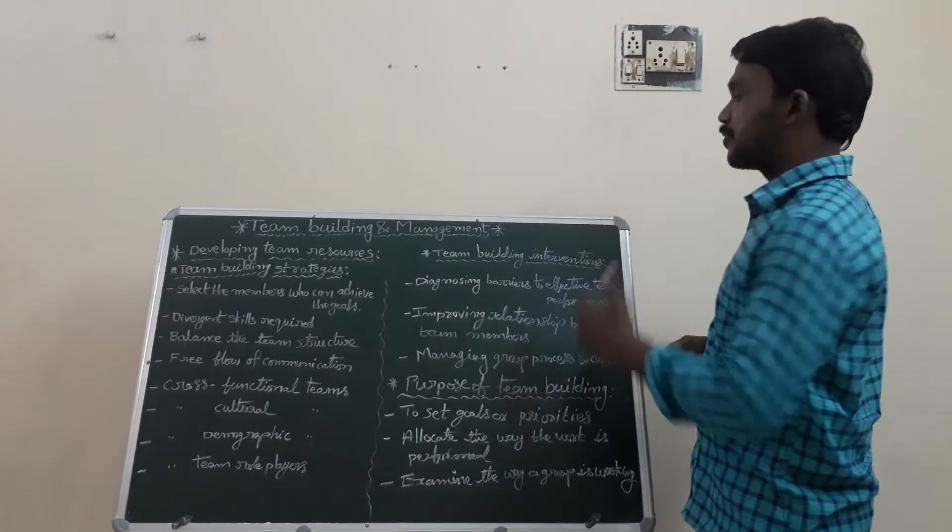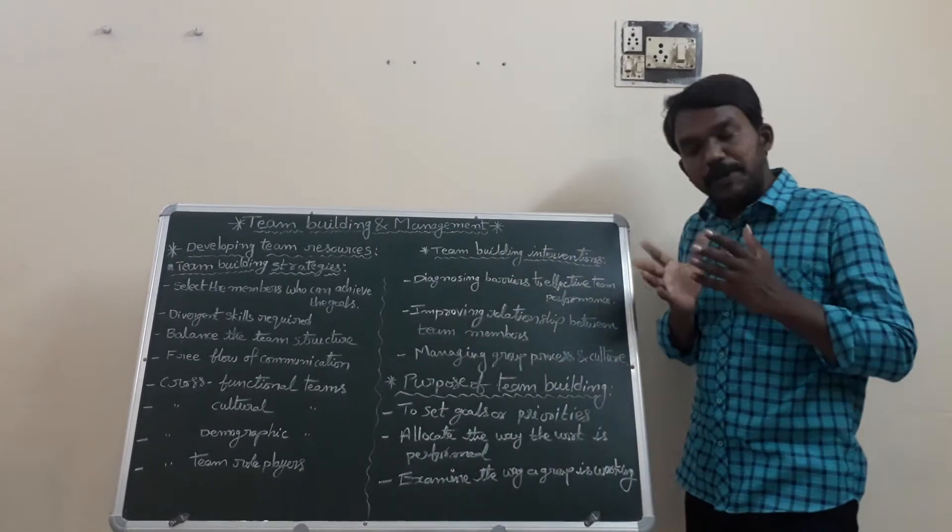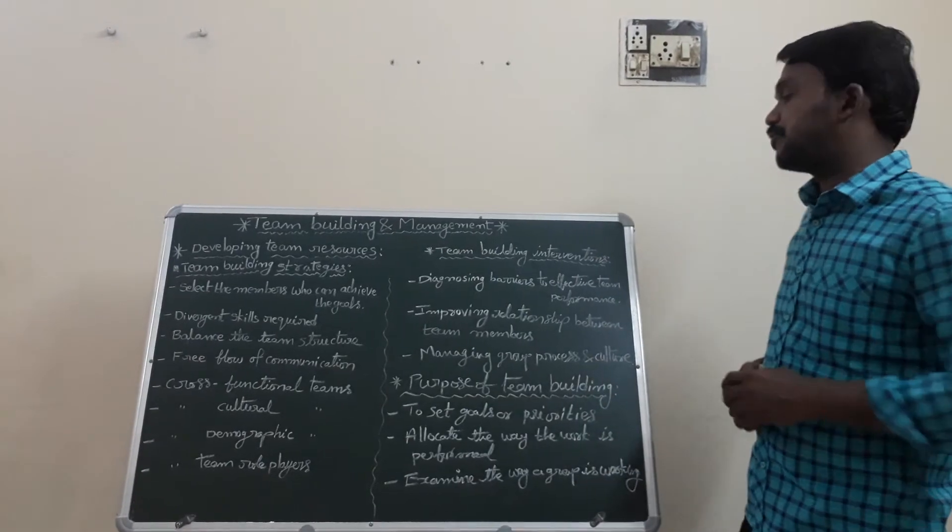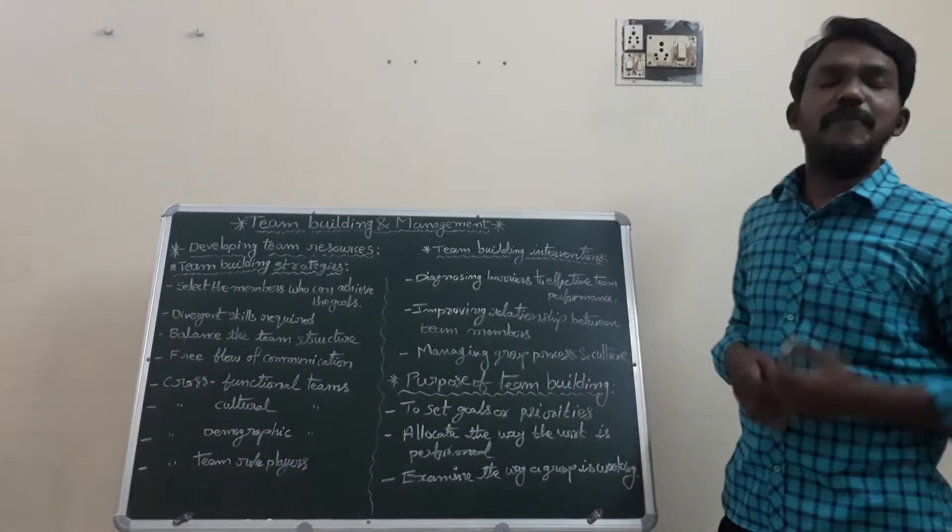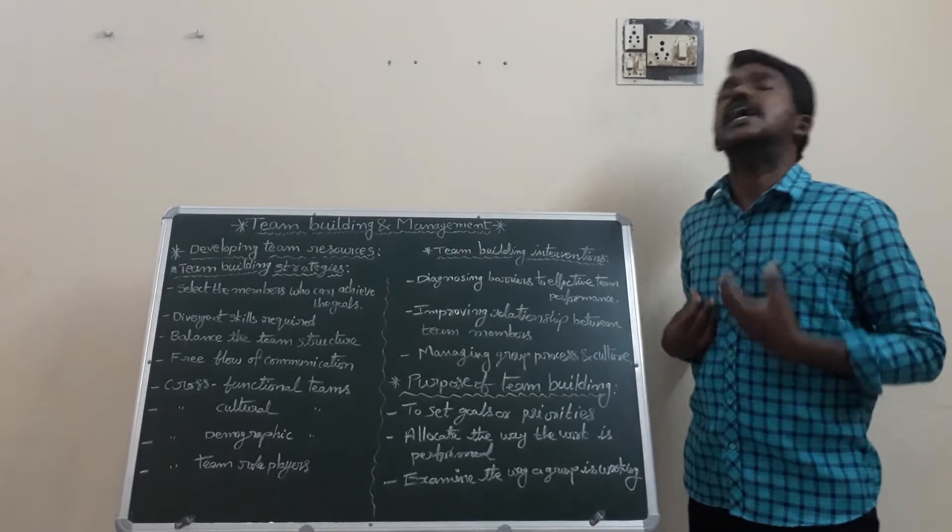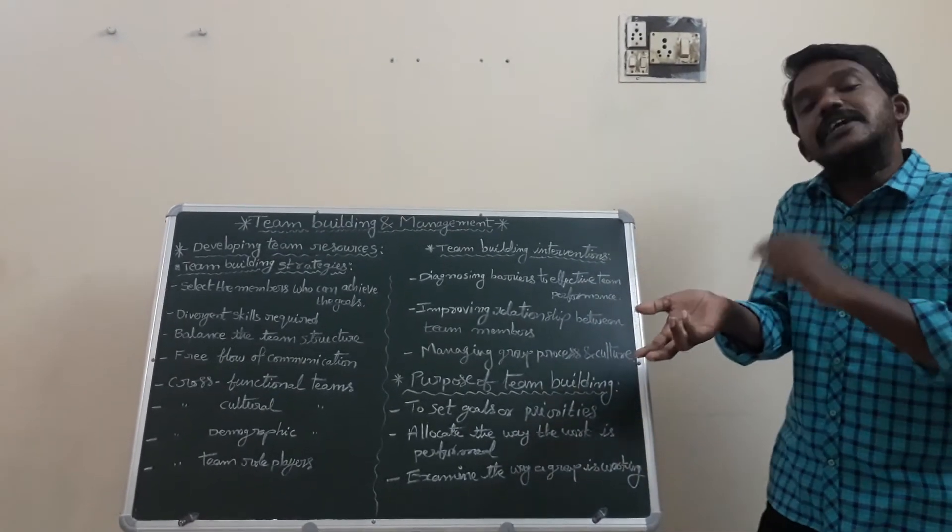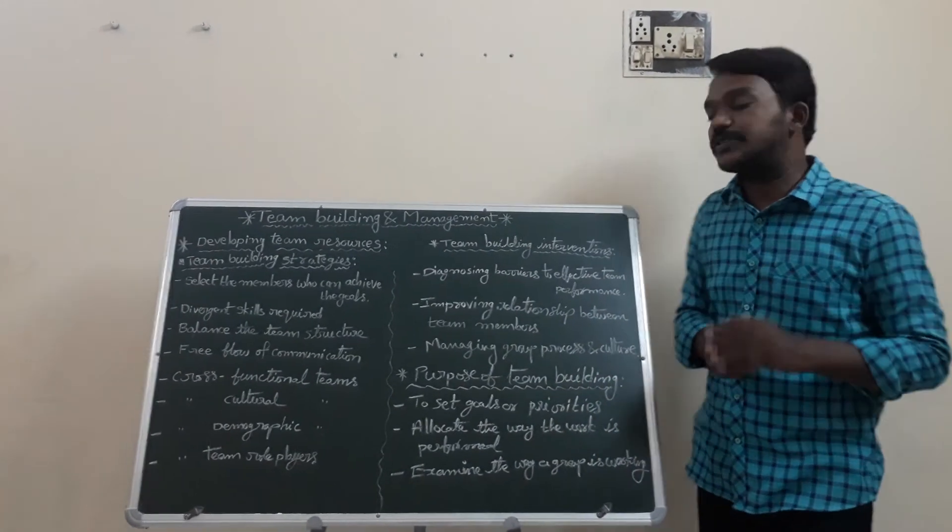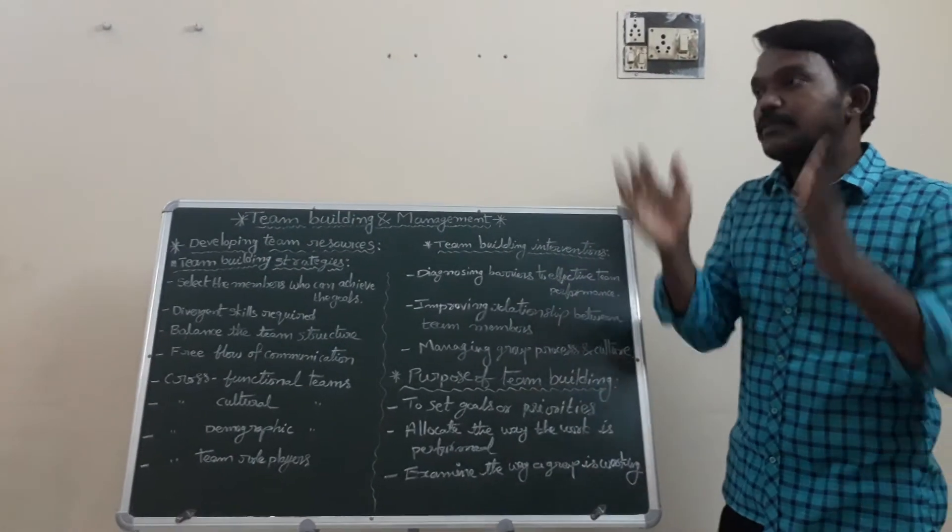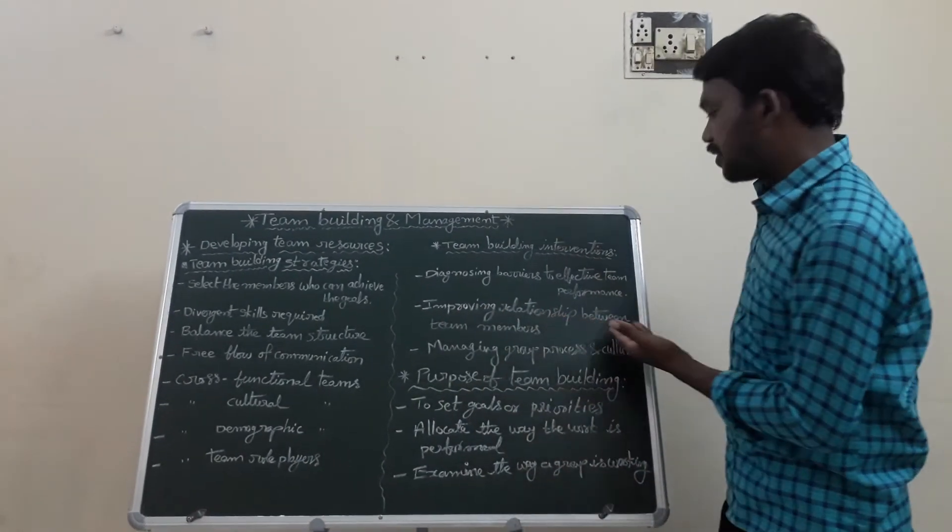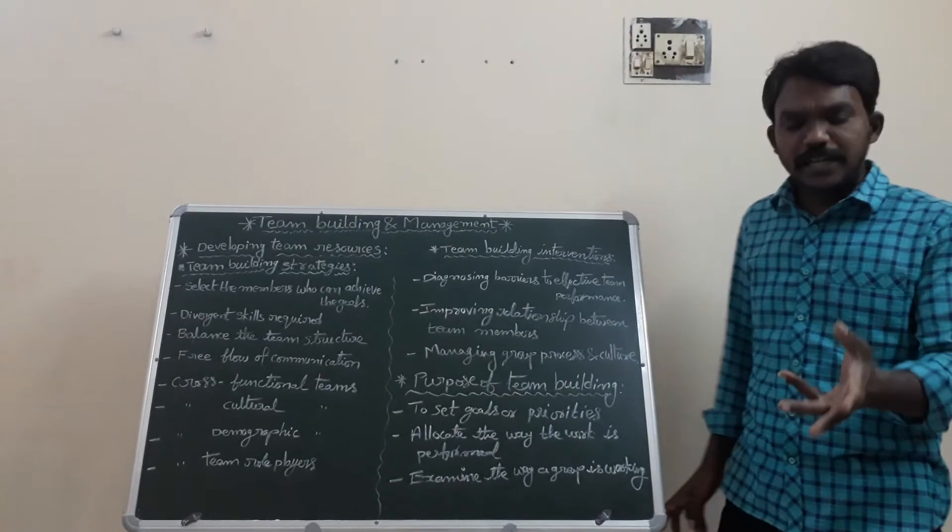Now team building interventions. Team building interventions involve diagnosing barriers to effective performance, then identifying and eliminating them. Next one is improving relationships between the team members. As a leader, we have to create good relationships among the members.